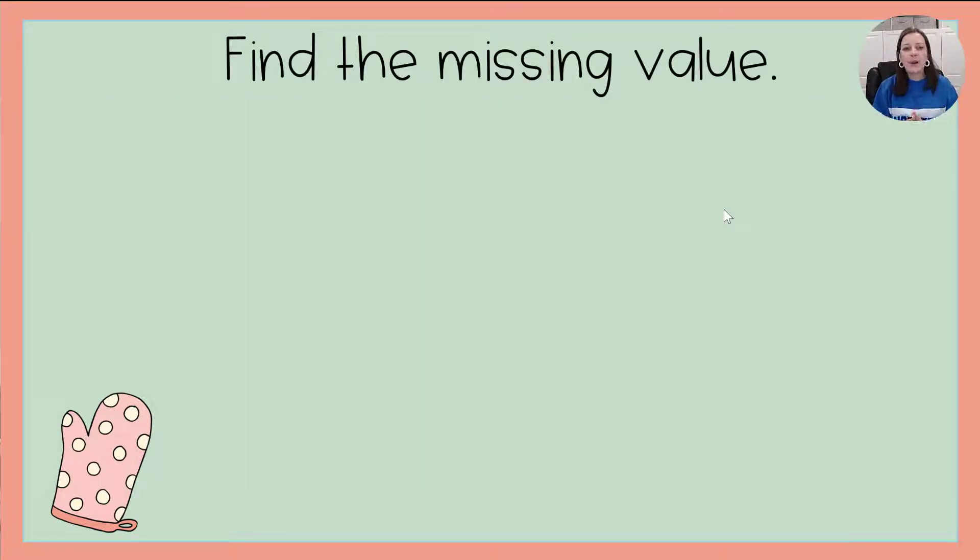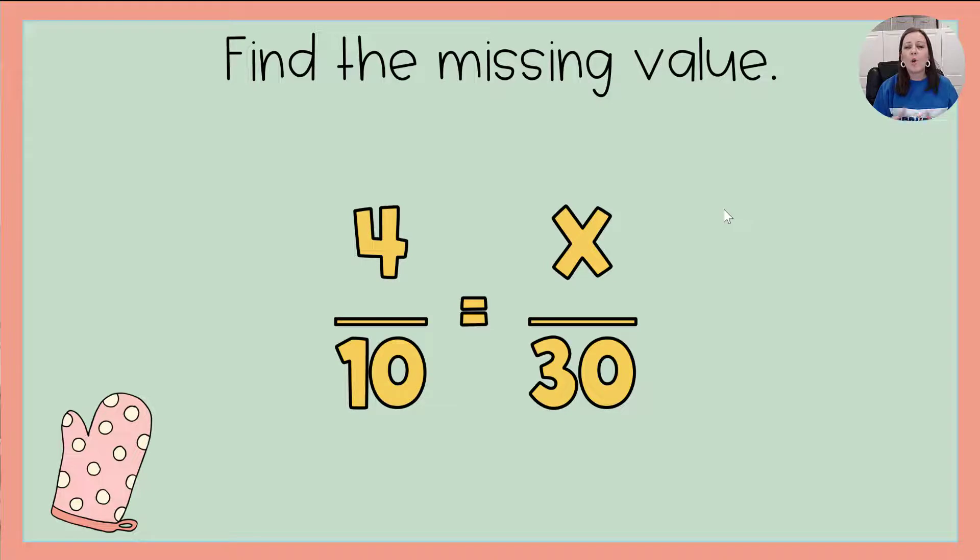Okay, in the last part of this video, we're going to talk about finding the missing value of a proportion. And so, I know these two things are equal, I know it's a proportion, but I'm missing a piece. So one way you can figure out what that missing piece is, is to say,